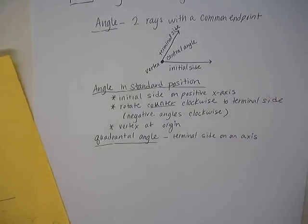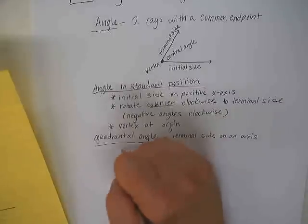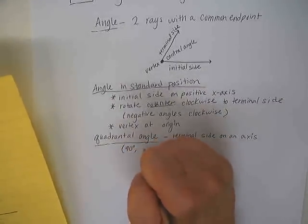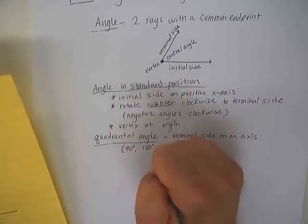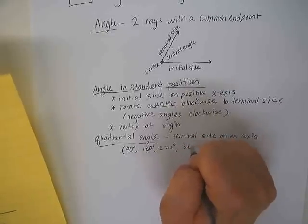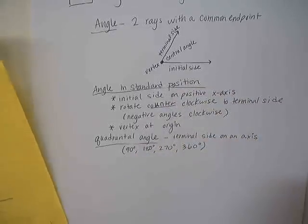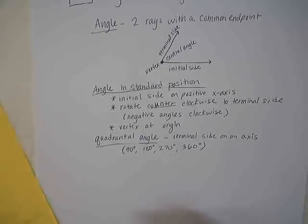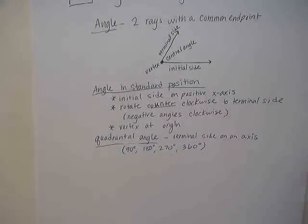A quadrantal angle is an angle whose terminal side is on an axis. Those end up being your 90, 180, 270, and 360 degree angles. And you all know that there are 360 degrees in a circle.